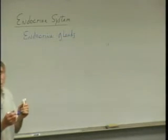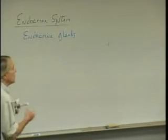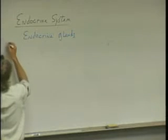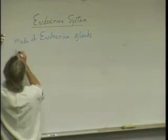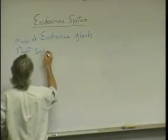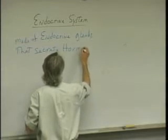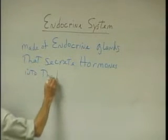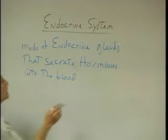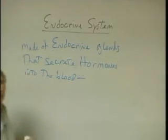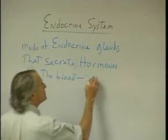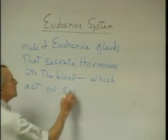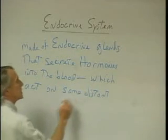That's not quite accurate, because we'll talk about the pancreas, which is a very important exocrine and endocrine gland. So the endocrine system is made of endocrine glands that secrete hormones into the bloodstream, and these hormones then act on some distant target tissue.